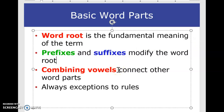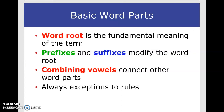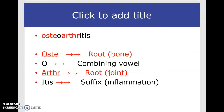Combining vowels are actually vowels — a, e, i, o, u — that connect two words together, either the prefix to the root or the root to the suffix, so that we are able to pronounce the term correctly.